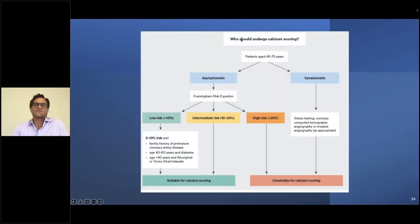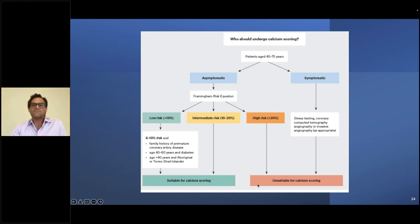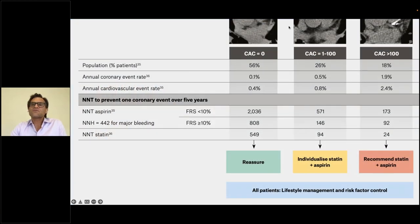Who should undergo calcium scoring? I wouldn't be strict about the recommended age range of 45–75, but we look at the Framingham risk equation combining low-risk and intermediate-risk groups — these benefit the most from calcium scoring in terms of downgrading. If someone is already high-risk, calcium scoring is unsuitable and sometimes we move straight to direct invasive angiography. In terms of what calcium score categories mean clinically: score 0, score 1–100, and over 100 each carry different implications for management.